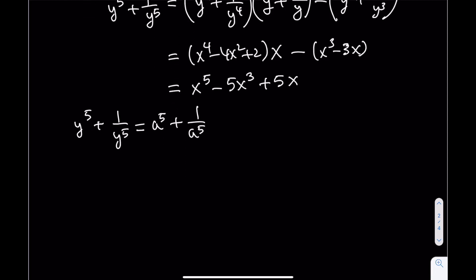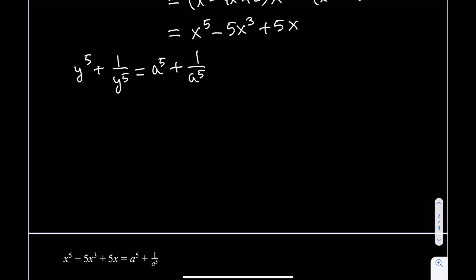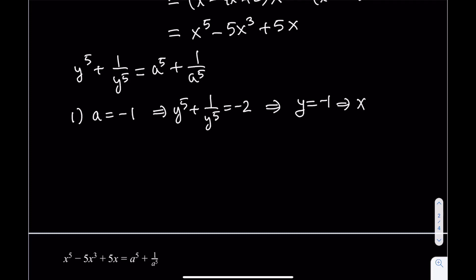We'll now look at cases. First, if a equals negative 1, then y to the fifth plus 1 over y to the fifth equals negative 2, giving y equals negative 1, and therefore x equals y plus 1 over y equals negative 2. Second, if a equals 0, there are no solutions.